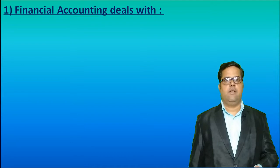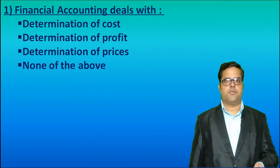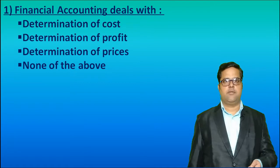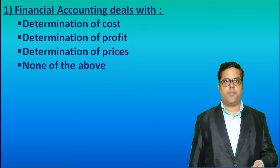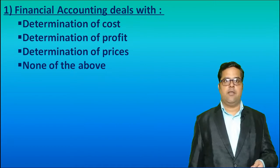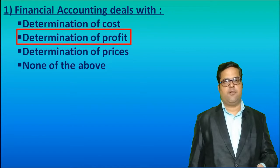First, Financial Accounting deals with — you are given 4 options: Determination of Cost, Determination of Profit, Determination of Prices, None of the above. Students, you have been studying Financial Accounts since FYJC. We used to prepare Trading P&L Accounts to find out Profit. So, the main objective of preparing Final Accounts under Financial Accounting is to Determine Profit. The correct answer is Determination of Profit.